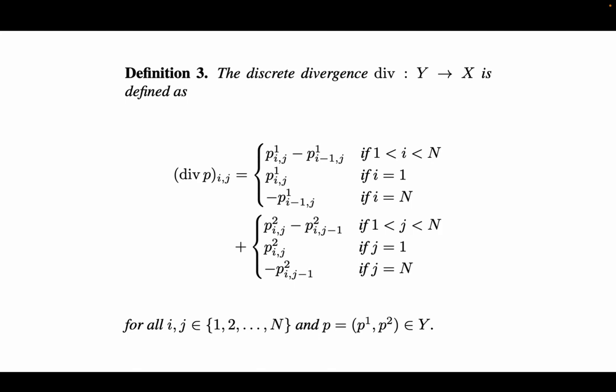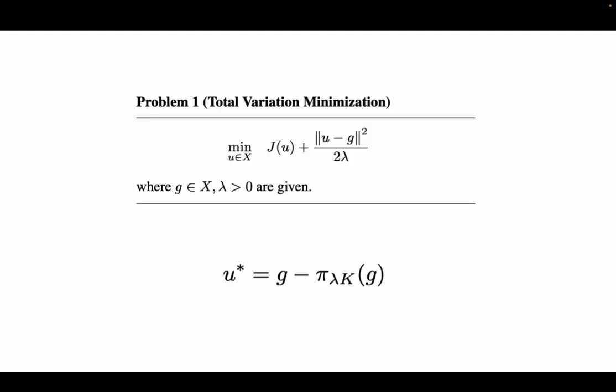Next, we'll define the discrete divergence of the image used here. And in his paper, Chambel defined this problem 1, which is the total variation minimization here. Here, J(u) is the total variation of the image u, and the second term is an L2 norm minimization term that ensures the smoothness of the solution.